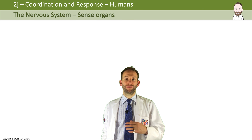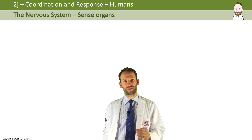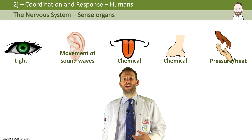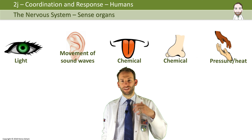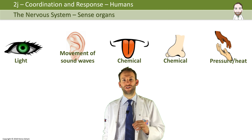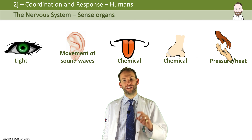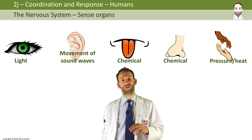Receptor cells — these special cells that can detect stimuli — are found in your sense organs: your eyes, ears, tongue, nose, and skin. We don't have time to look into all of these in detail, but in the IGCSE syllabus you do need to know about the eye as an example of a sense organ.